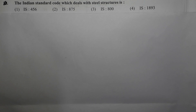The Indian standard code which deals with steel structures — the correct option is option number 3: IS 800. IS 800 is the general code of practice for construction in steel. So option 3 is the correct option.